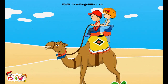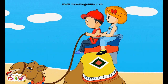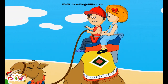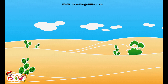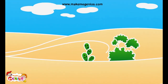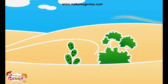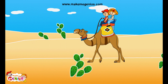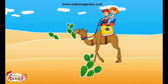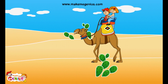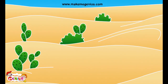The desert is such a dry area. There seems to be no water nearby. You are right. There is very little rain in the desert and there are no rivers here. But see, there are plants. I wonder how these plants are able to live in the desert without water.